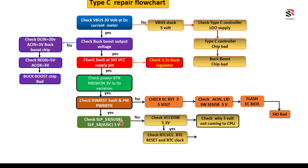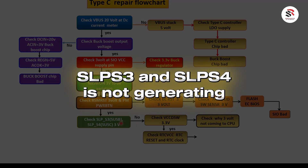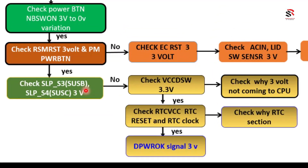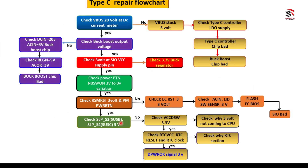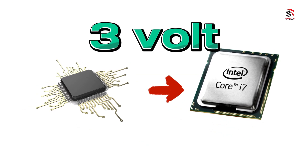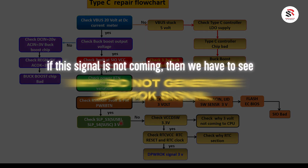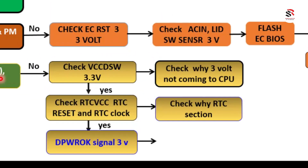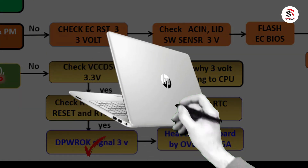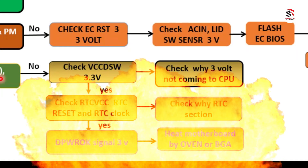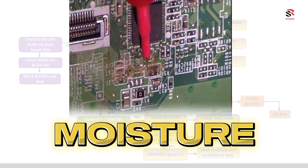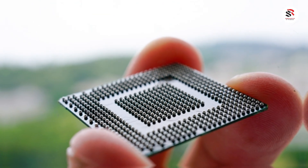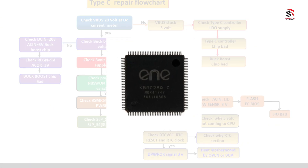If the RTC section is working properly but SLP_S3 and SLP_S4 are still not generating, check the DPWROK signal — the deep sleep power OK signal generated by the SIO and sent to the CPU, which should be 3V. If DPWROK is not present, investigate why the SIO is not generating it. If DPWROK is present but SLP_S3 and SLP_S4 are still absent, try heating the motherboard, because moisture can form between closely-spaced CPU balls or SIO legs, causing dry solder joints.